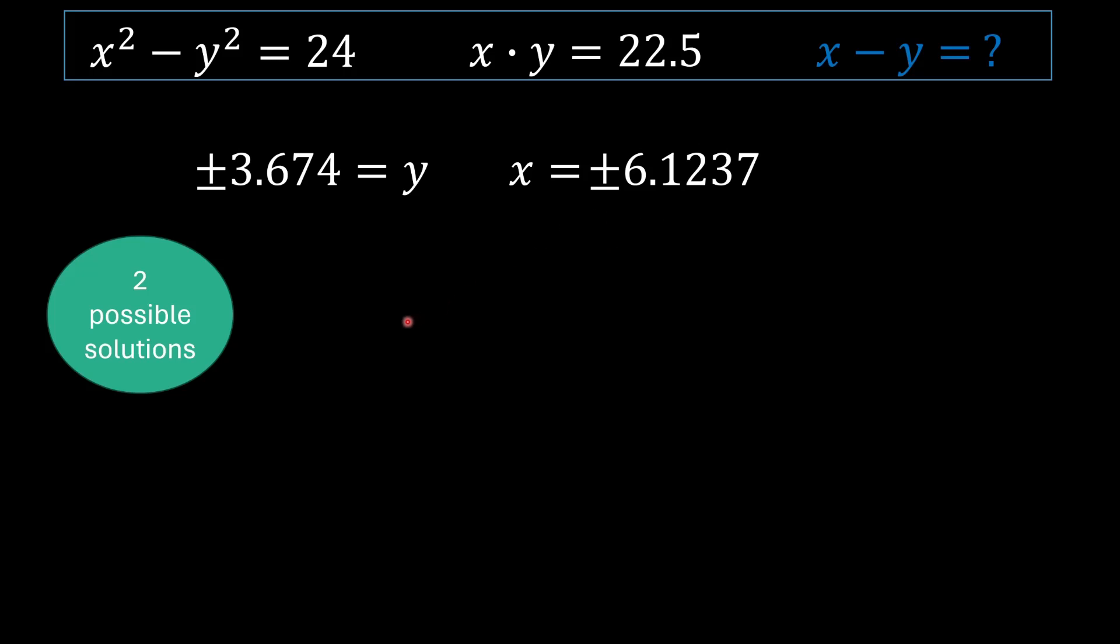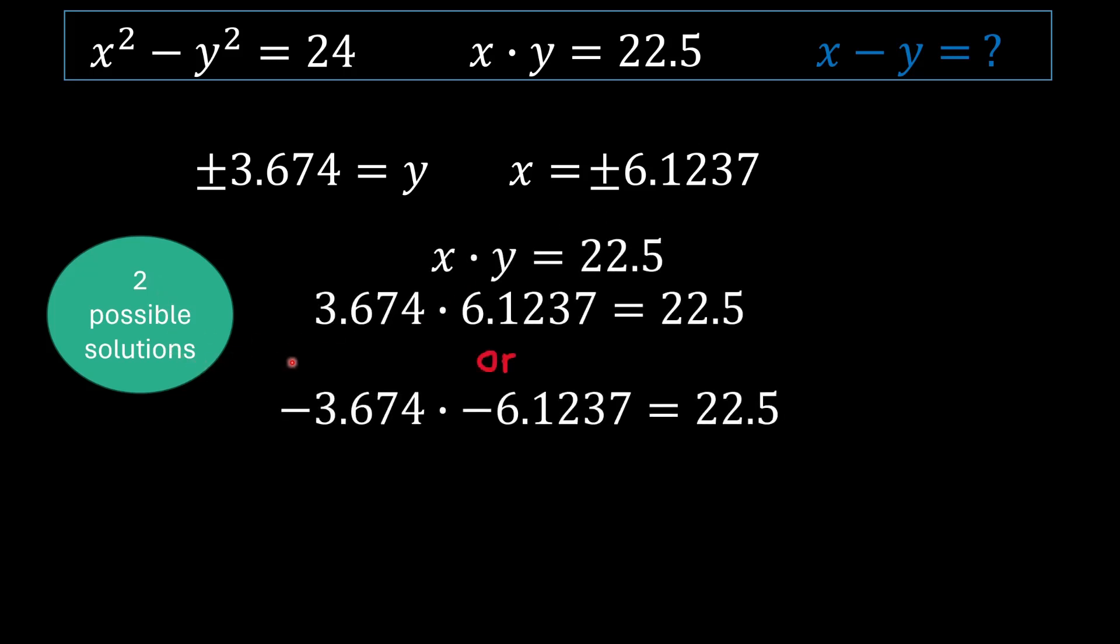Right, so we established this, but we're not done yet. We have two possible solutions. As you can see, we could either, we could only take a positive x and a positive y variable to make it equal to 22.5. 22.5 is this equation right here. Or we can get two negatives. So we could have a negative 3.674 multiplied by a negative 6.1237. Both will yield an answer of 22.5. So in this question, there's two possible solutions.